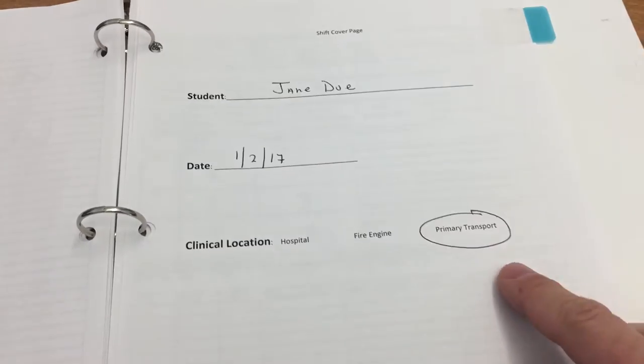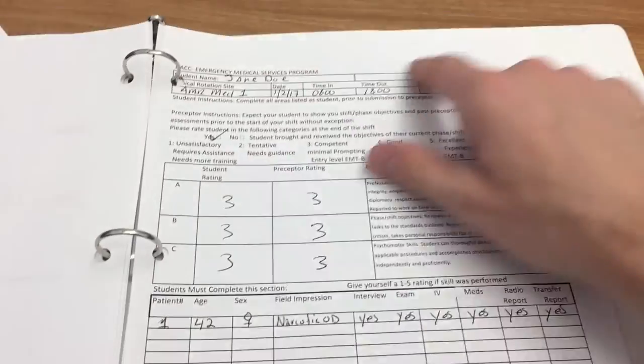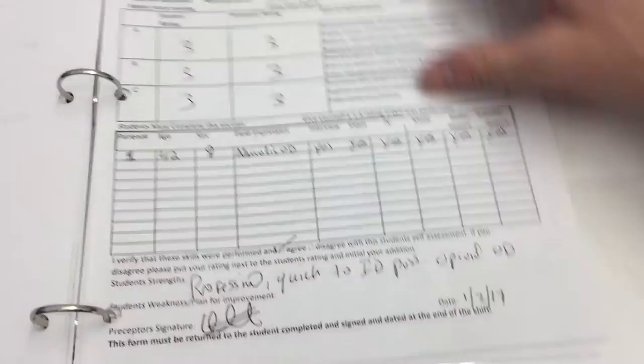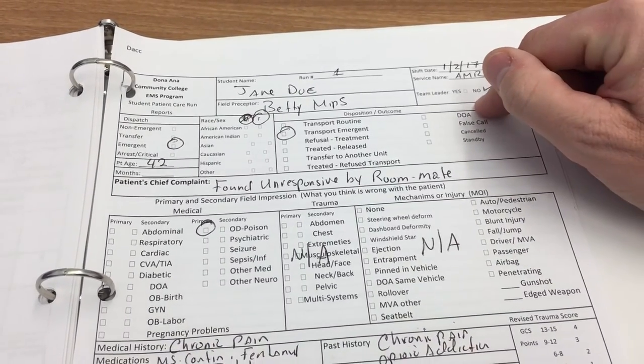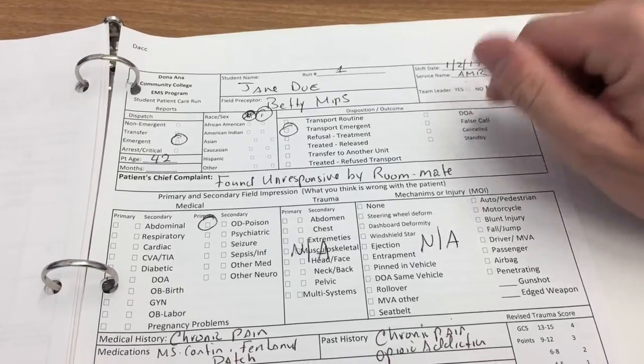So a student here. So this is a primary transport. This is AMR Medic 1. And you see it filled out, just like that. The big difference here is if you want to handwrite a report, you will need to download this sheet here. This is your patient care report for the field. This is not hospital, though.